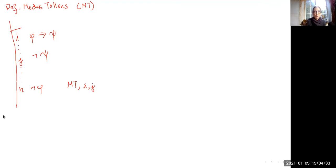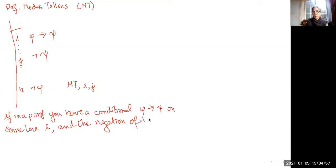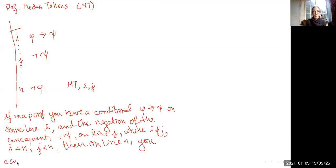Let me write the rule out so that you've also got the written version of it. So if in a proof you have a conditional phi implies psi on some line i, and the negation of the consequent, that is not psi on some line j, where just start a little bit of bookkeeping, i and j are not the same line, i comes in the proof before n, j comes in the proof before n, then on line n you can write down the negation of the antecedent, not phi.